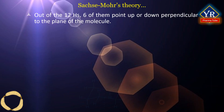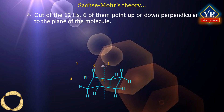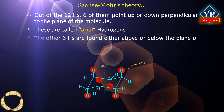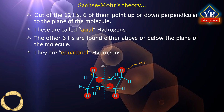Out of the 12 hydrogens present in cyclohexane, six of them point up or down perpendicular to the plane of the molecule — these are called axial hydrogens. The other six hydrogens are found either above or below the plane of the molecule — they are equatorial hydrogens. In the boat form, the two axial hydrogens on C1 and C4 are closer than in the chair form. Hence, the energy of the boat form is more than the chair form.